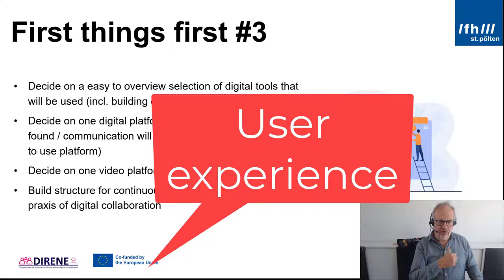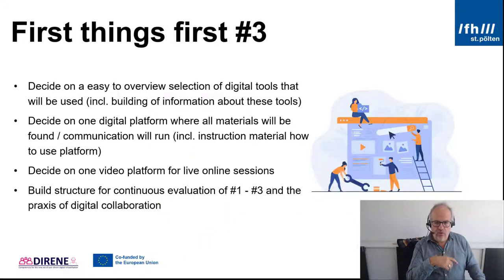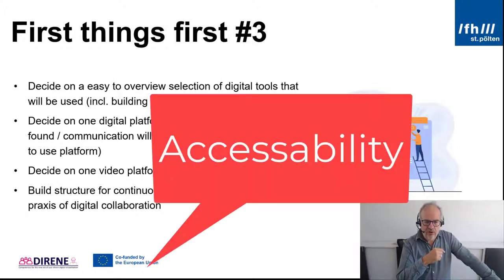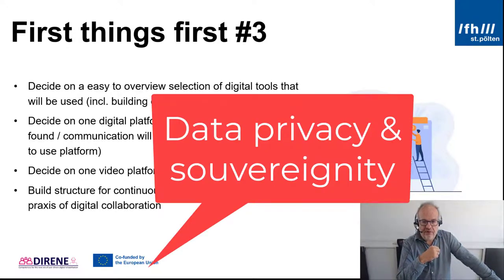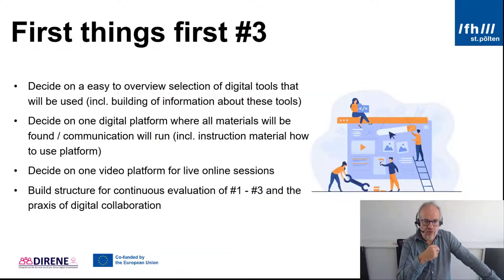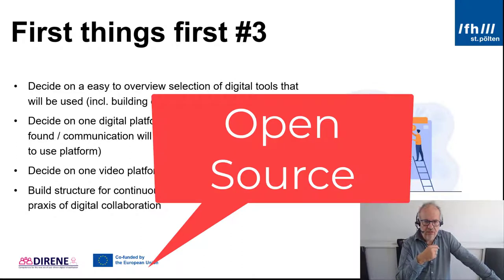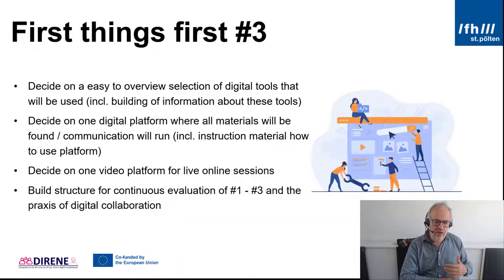The first thing to look at is user experience — how easy it is to use tools and platforms. The second is accessibility, which is not only about people with sight or hearing difficulties, it's a concern for everybody. The next thing is data privacy and data sovereignty — where are data stored, who has access, how is it documented? And finally, open source — products evolved by a whole crowd of people, open and easy to access.